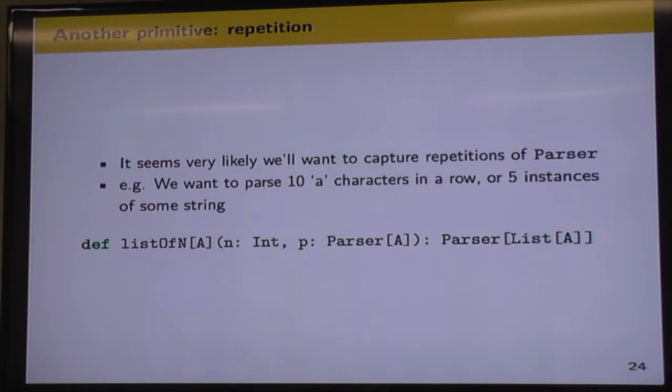And just to continue getting an idea of the process, we can think of another primitive that we might need, which is a list of things or repetitions. So we might want to parse, say, ten A characters in a row as one example. And we can write another primitive. And this one isn't a trick. This one is a primitive.